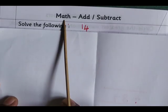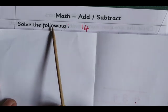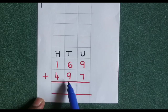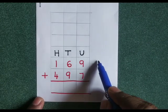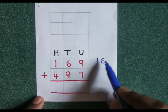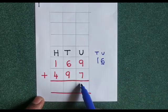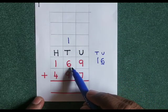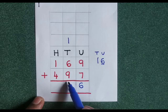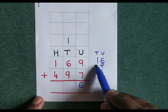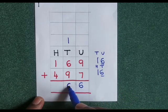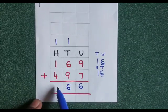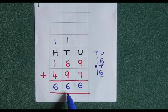Math: add and subtract. Solve the following: 169 plus 497. 9 plus 7 gives us 16. Write down 6, carry 1 to the tens place. 1 plus 6 is 7, 7 plus 9 is again 16. Write 6 at the tens place, carry 1 to the hundreds place. 1 plus 1 is 2, 2 plus 4 is 6. The answer is 666.